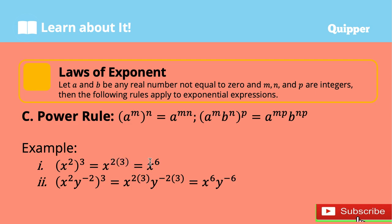Another example: x squared times y to the power of negative 2, all raised to the power of 3. Distribute the 3rd power to each power: x to the power of 2 times 3, times y to the power of negative 2 times 3. That equals x to the power of 6 times y to the power of negative 6.